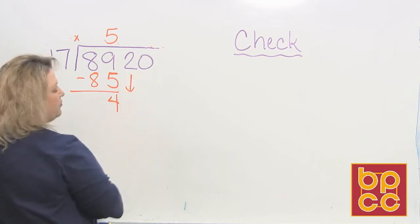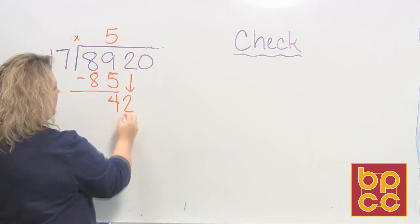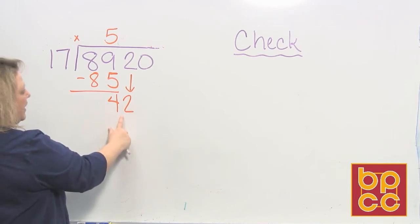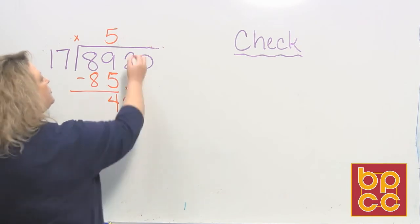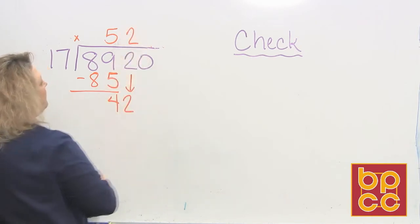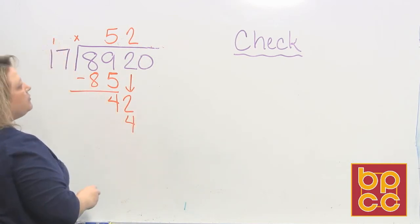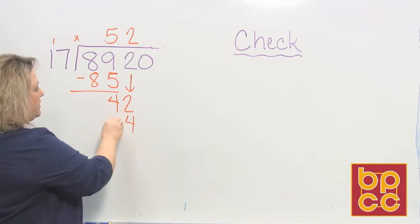So then B, burgers, bring down the next number. So when I do that, I do my whole saying over again. 17 divides into 42 about 2 times, and then I multiply. 2 times 7 is 14, 2 times 1 is 2, plus 1 makes 3.